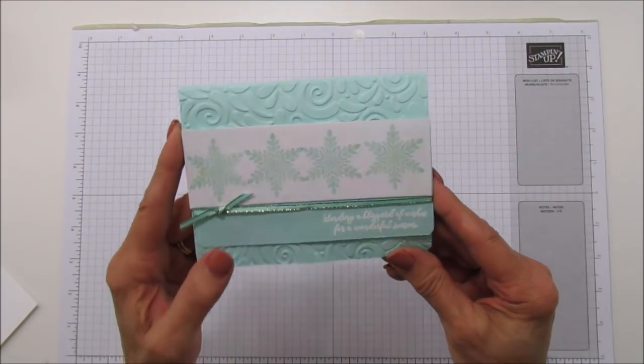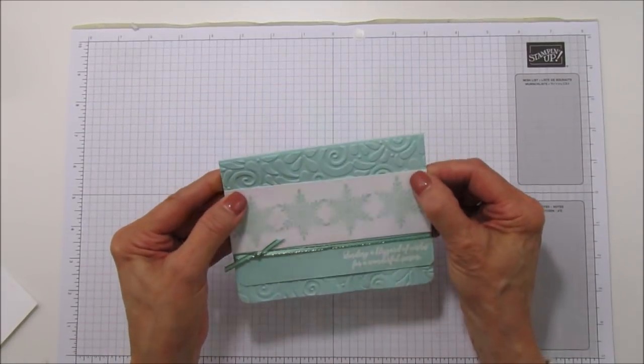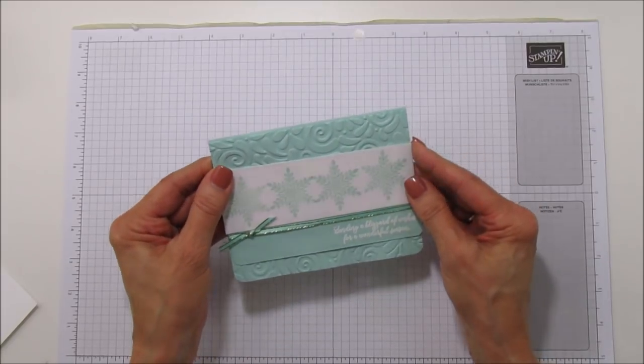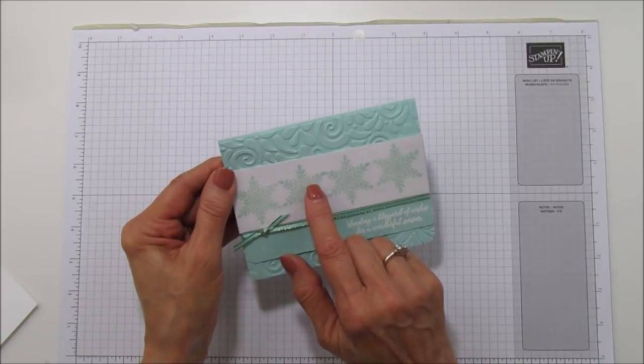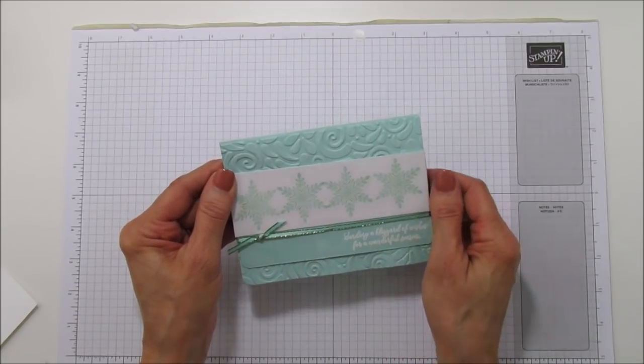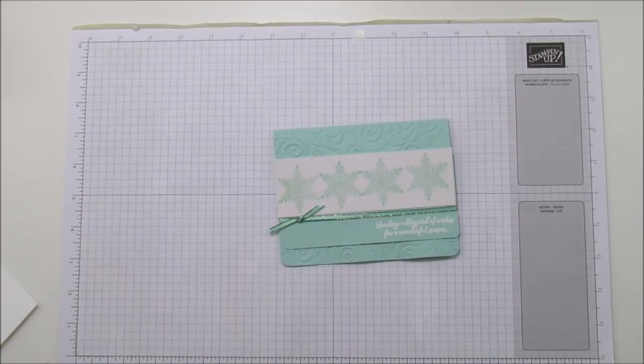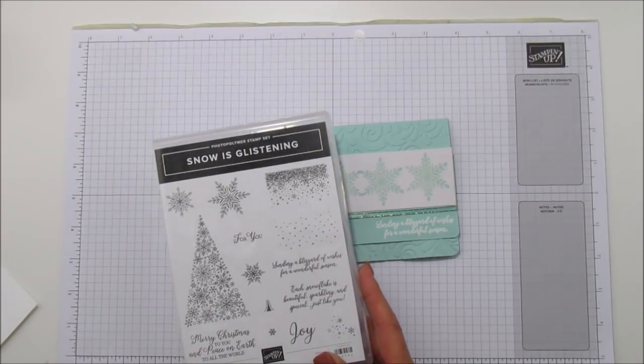It's so cute. I really love stamping on this and on this piece if you put your snowflakes close together you can get four of them on here and I am using the snow is glistening again.